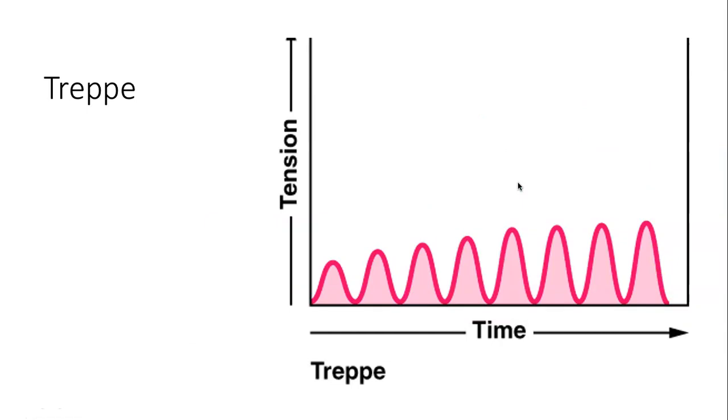When a skeletal muscle has been dormant for an extended period of time and then suddenly activated to contract, all other things being equal, the initial contractions will generate about half the force of the later contractions. You can see that muscle tension will increase in a graded manner that comes to look like stairs.